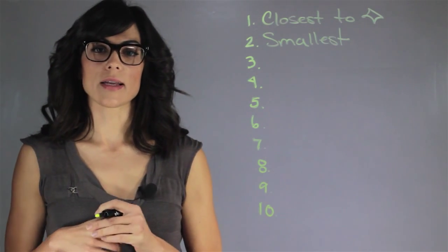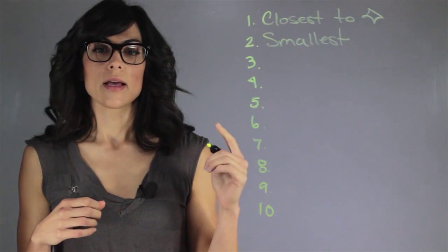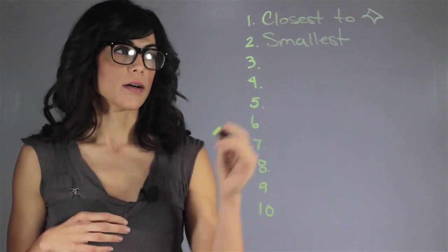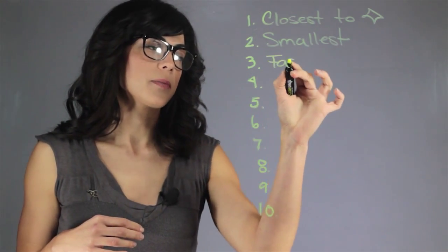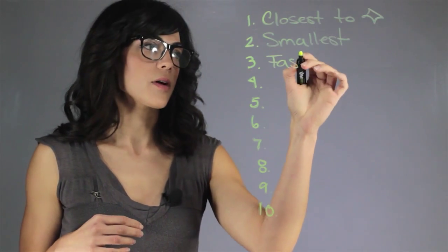Now the third thing is that it has an orbital speed that is very fast and that means that it completes revolutions around the Sun very quickly.